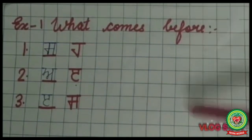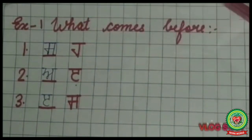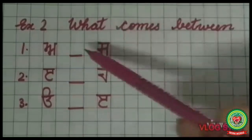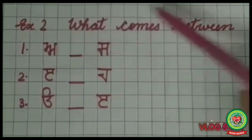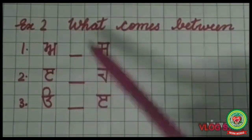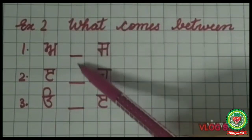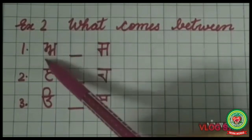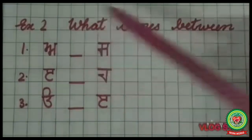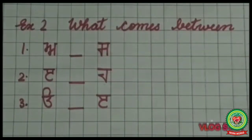That was the 'what comes before' exercise. Exercise 2 is 'what comes between' — that means we have to find and write which letter comes in between the two given letters.